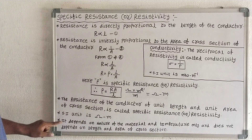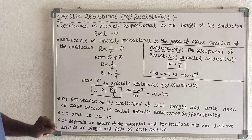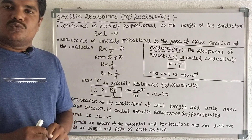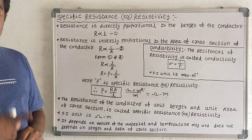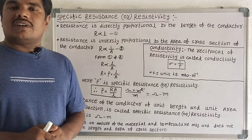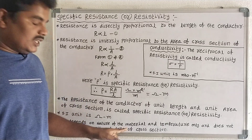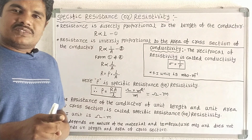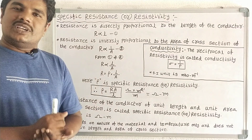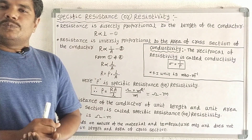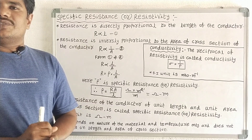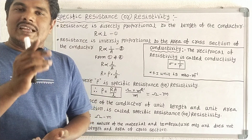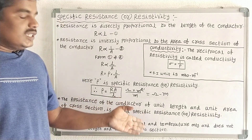The specific resistance or resistivity depends on the nature of the material and temperature only. But it does not depend on length and area of cross section. That is an important point. But resistance depends on all these four factors — nature of material, temperature, length, and area of cross section of the conductor.